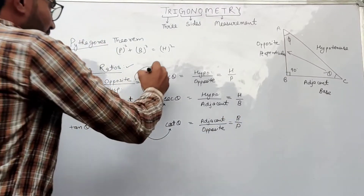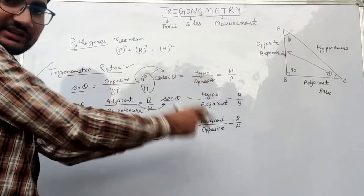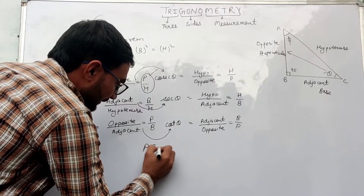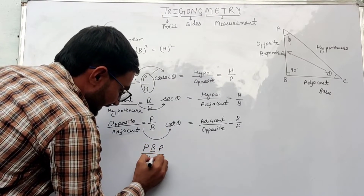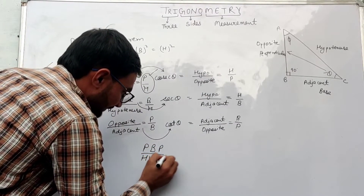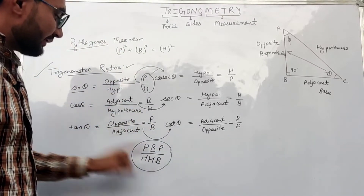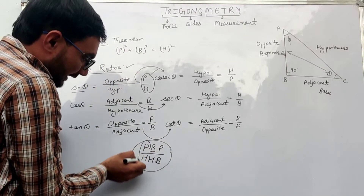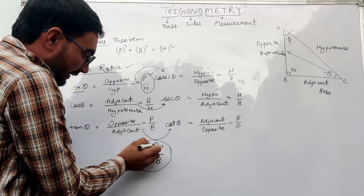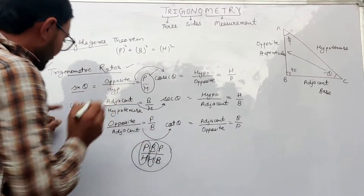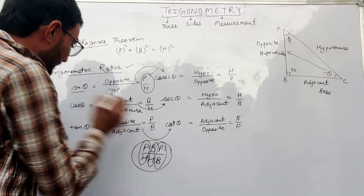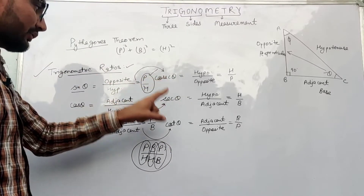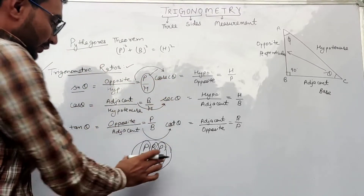Now the question comes: how to remember these relationships? There is a simple trick — P, B, P, S, S, B. We can use this to remember all the trigonometric ratios: P upon H is sin theta, B upon H is cos theta, and P upon B equals tan theta. The opposites of these will be cosecant, secant, and cotangent.